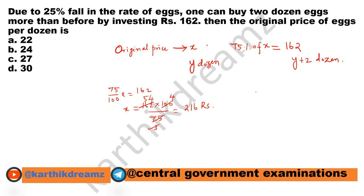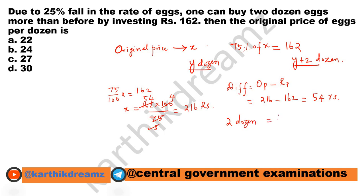The difference between the original price and the reduced price: 216 minus 162 equals 54 rupees. Since the difference in dozens is 2, we have 2 dozen X equal to 54 rupees. Therefore, 1 dozen equals 54 divided by 2, which is 27 rupees. So the answer is C: 27 rupees.